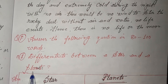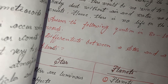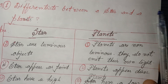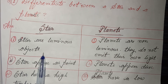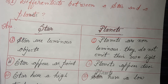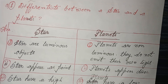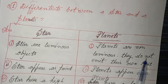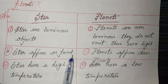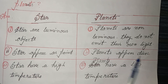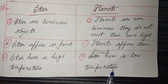Answer the following questions in 80 to 100 words. Differentiate between a star and a planet. Stars are luminous objects; planets are non-luminous and do not emit their own light. Stars appear as points; planets appear as discs. Stars have a high temperature; planets have a low temperature.